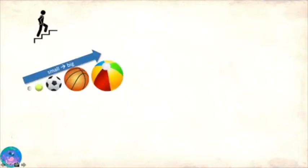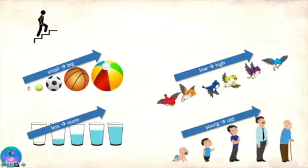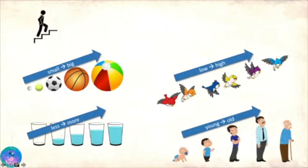So when we talk about going up like in small to big, low to high, less to more, or young to old, that is ascending order. A ascending goes up.